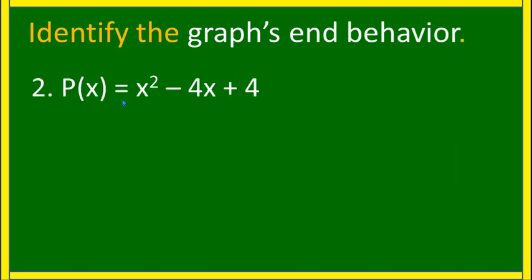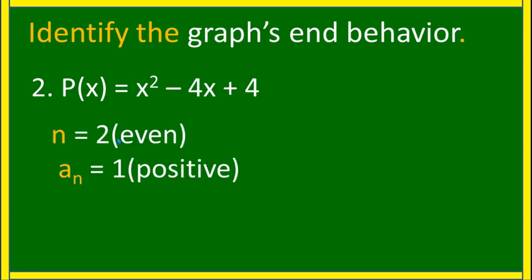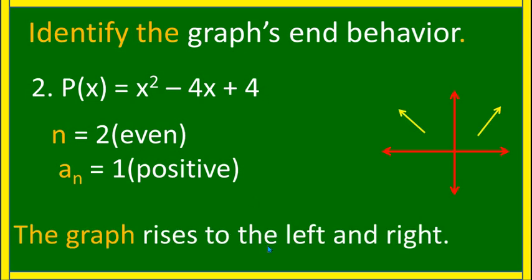Second example: p(x) = x² − 4x + 4. It is already in standard form. Focus on n, which is 2 — that is even — and the leading coefficient, which is 1, is positive. Therefore, the graph rises to the left and right.